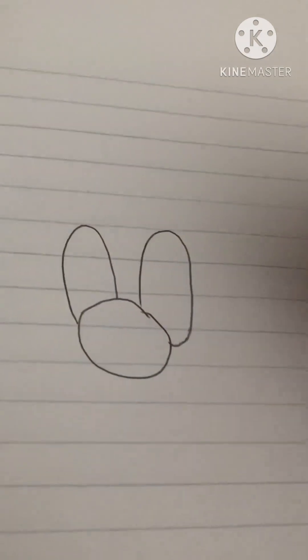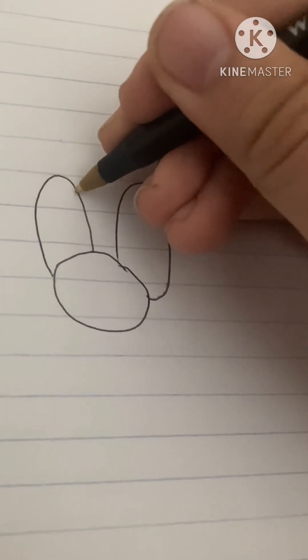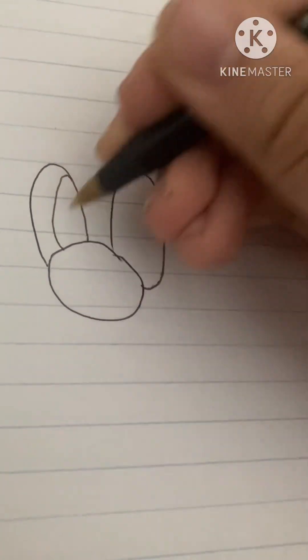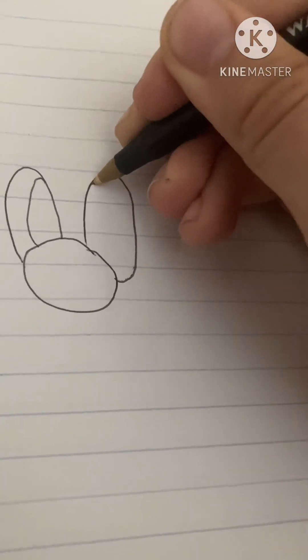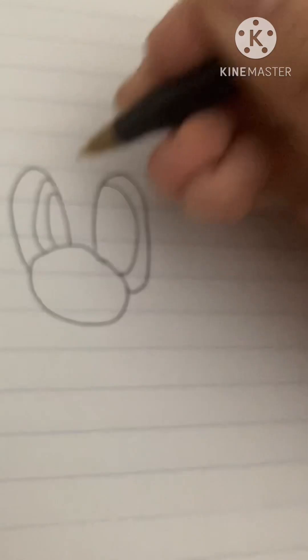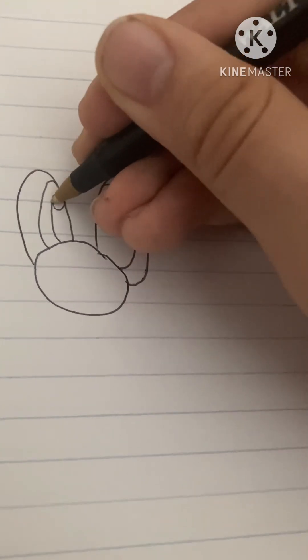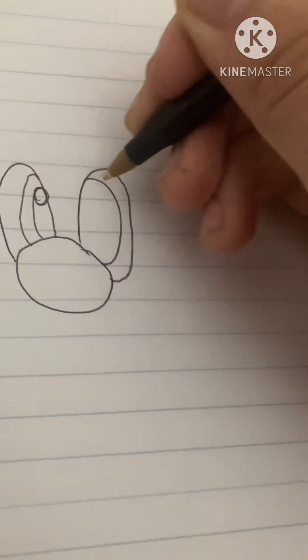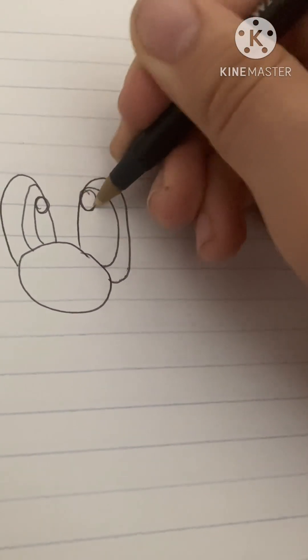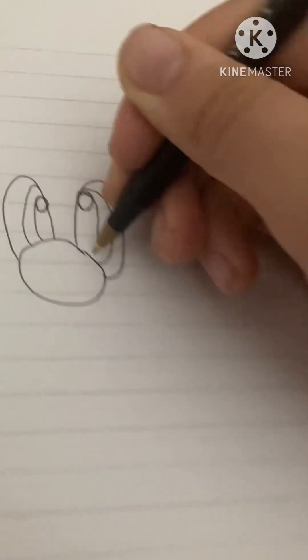So this is pretty much very similar to the Mario tutorial, but there's gonna be some different steps. So now we're gonna do the same thing we did in the Mario tutorial with the eyes. If you didn't watch the Mario tutorial, check it out, it's pretty cool. I'm gonna draw a circle inside and another circle inside.